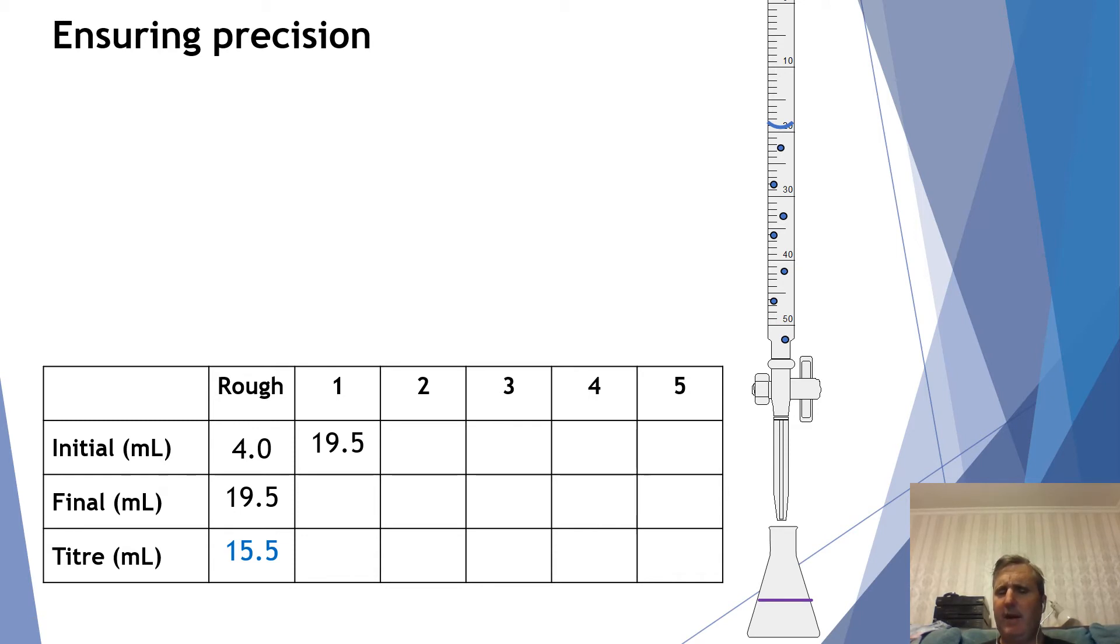So what I would do is I would look at the scale, see where it is at the moment, it's at 19.5 and I would add 14.5 onto that 19.5. So 19.5 plus 14.5 gives us 34. So what I then do is I'm going to turn this tap on while looking at the scale and I'm going to let the solution out until it gets to 34.